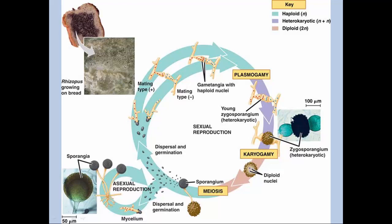The zygospore can be pretty resistant to unfavorable conditions and can survive. This is showing the two sides of hyphae that fused together and made this zygospore structure. Eventually the nuclei fuse together, you get a diploid nucleus, and then this can grow a sporangium structure, which is the spore-producing structure. Those spores can then go on to germinate into new hyphae, and these spores are haploid.